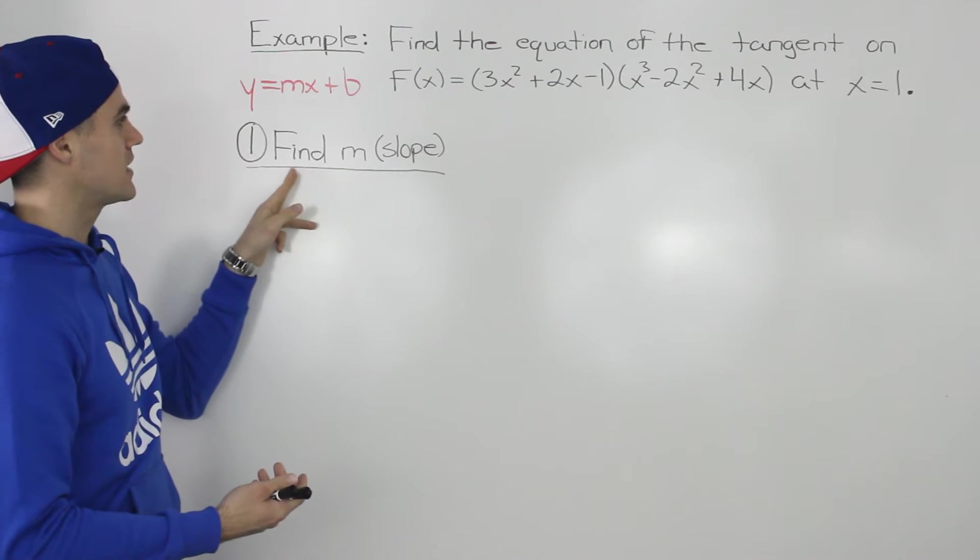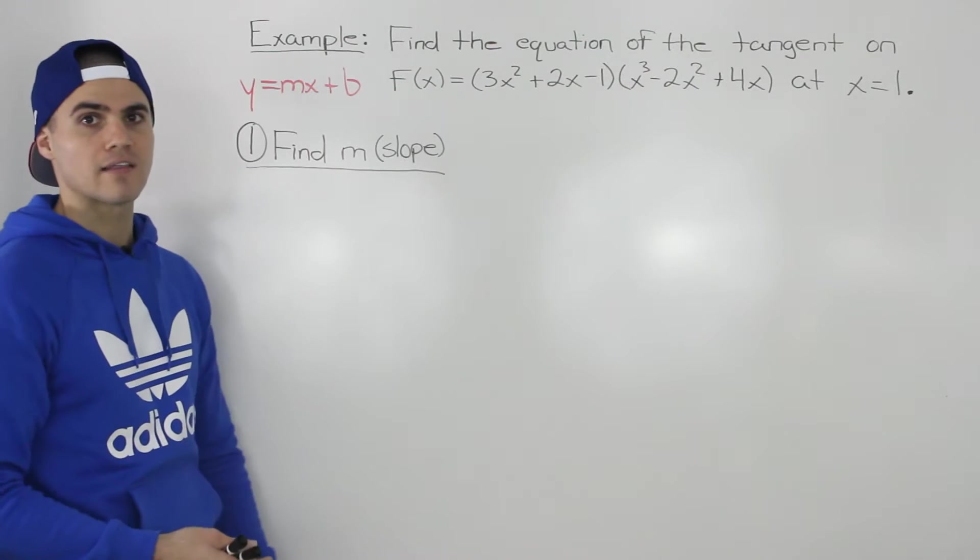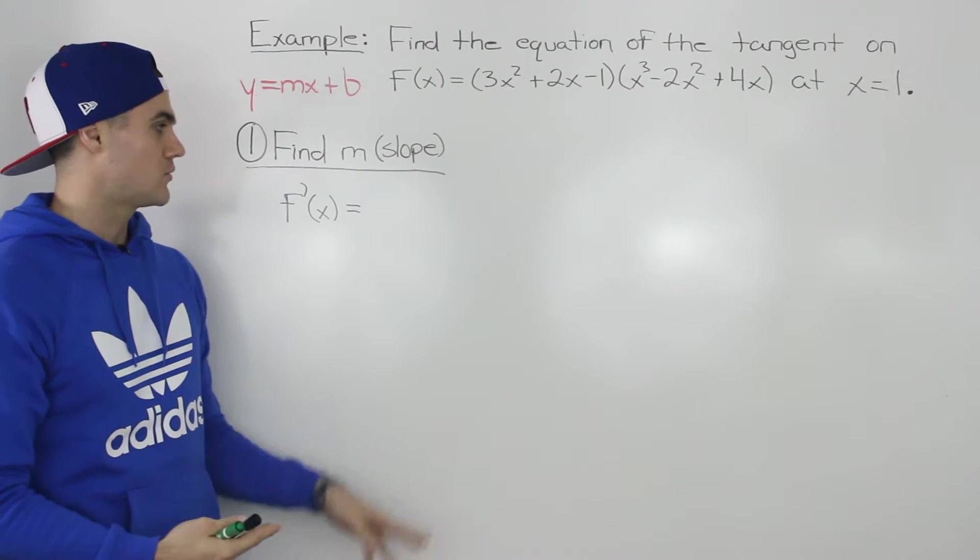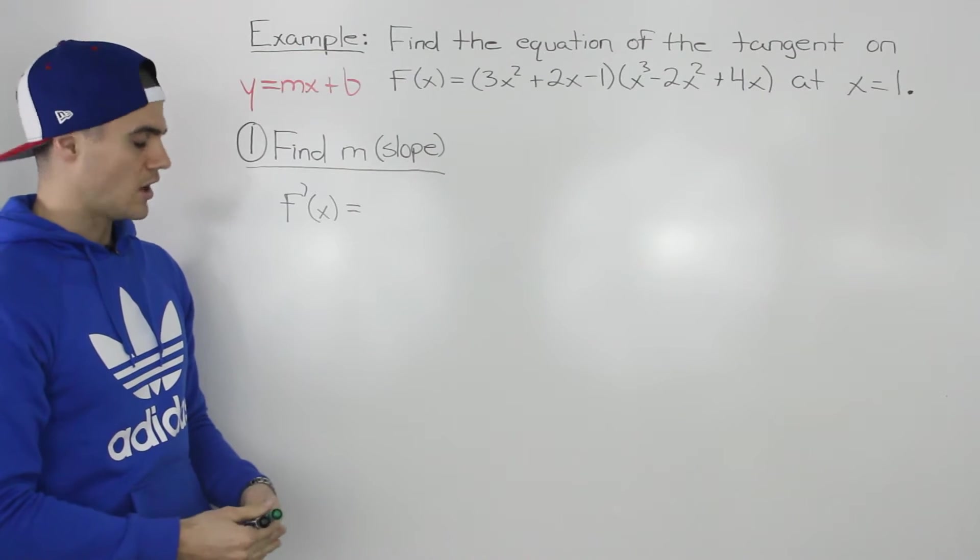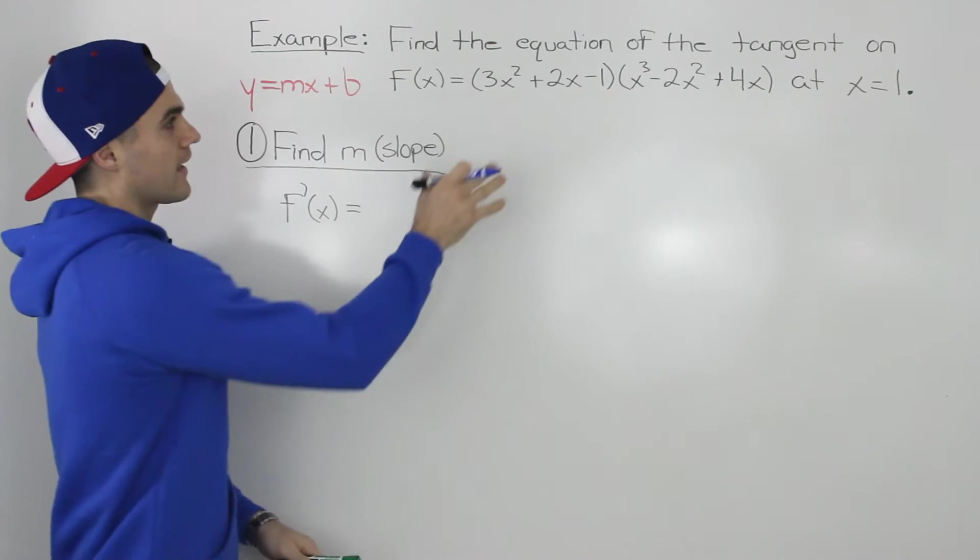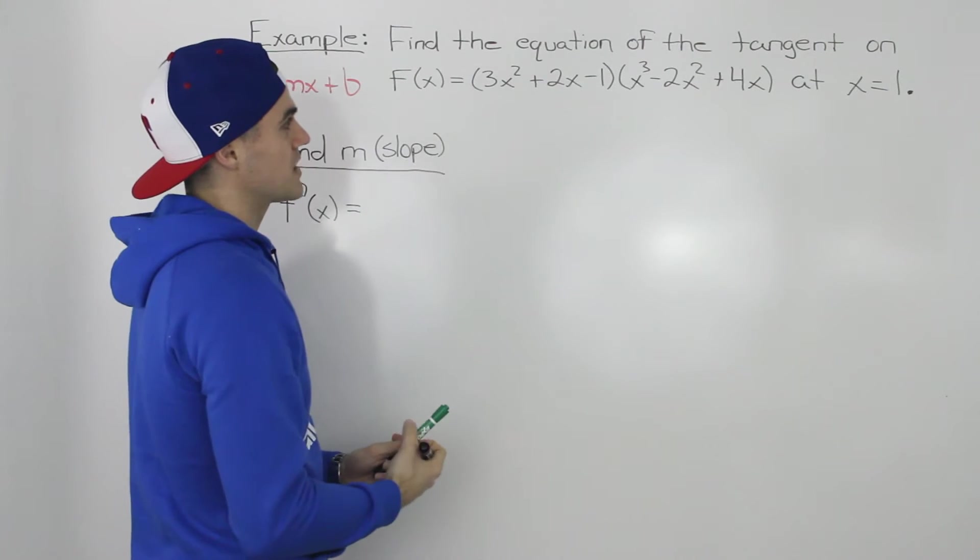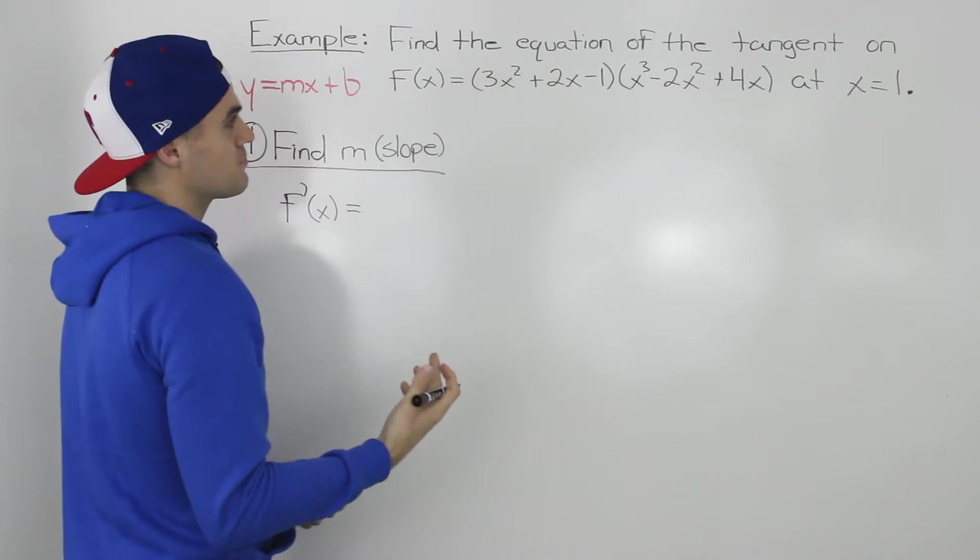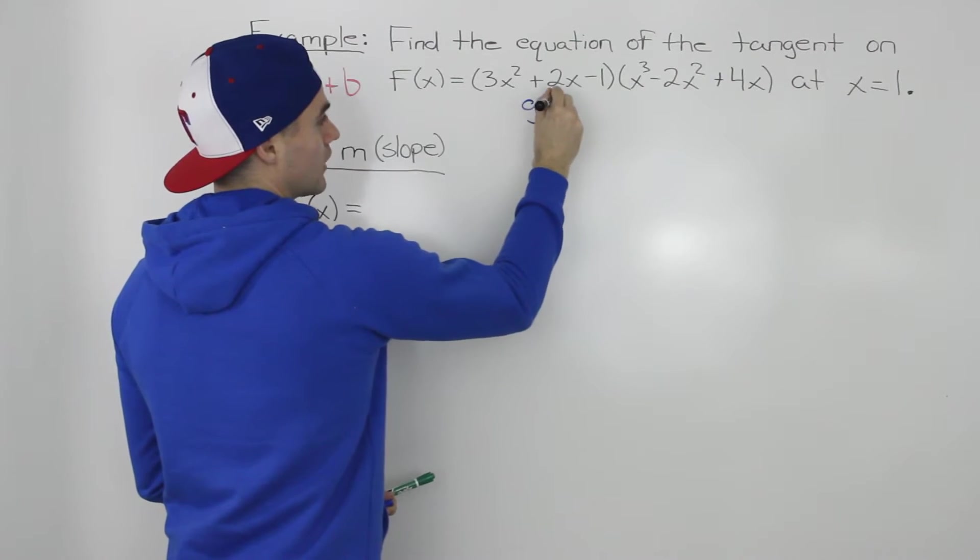The first step is we have to find the slope of that tangent, the m value of that line. To find the slope of a tangent line, we have to find the derivative of this function. We can expand these two brackets and then apply the power rule to each of the terms separately, but just for practice, let's use the product rule.